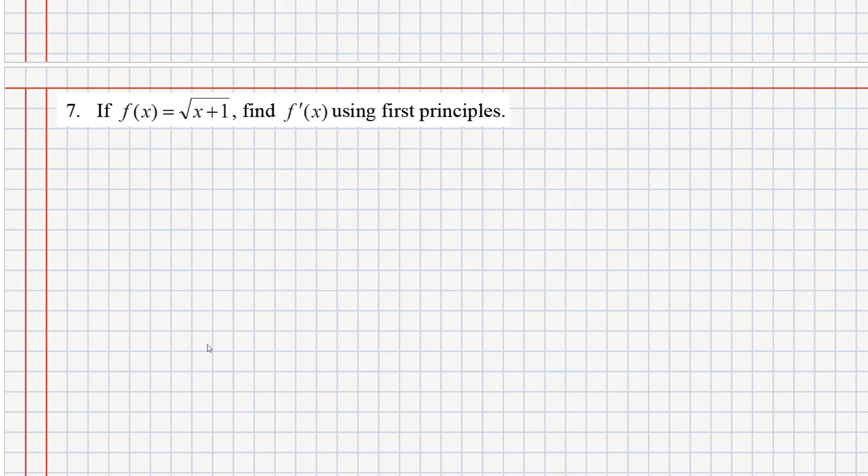Looking at this question, I'm going to rewrite f of x equals the square root of x plus 1. The second step is I'm going to write down the definition of f of x plus h. It might seem redundant, but it's always a good idea to do this because it's really easy to make a mistake with these definitions. Every time I see an x here, I'm going to turn it into an x plus h. I've got my two definitions down.